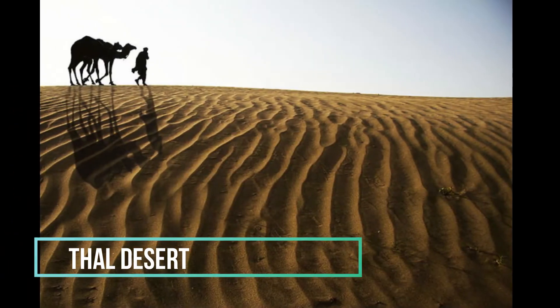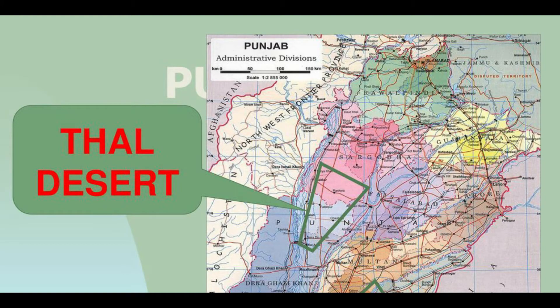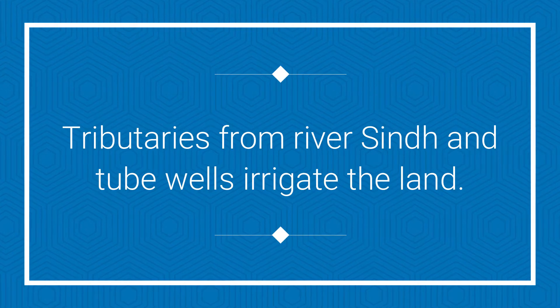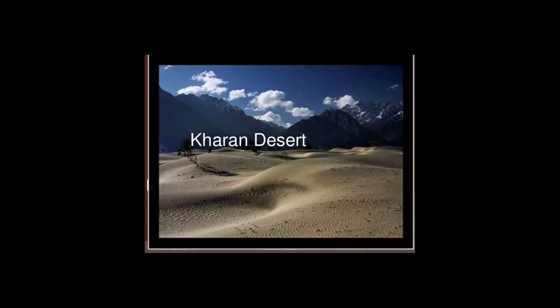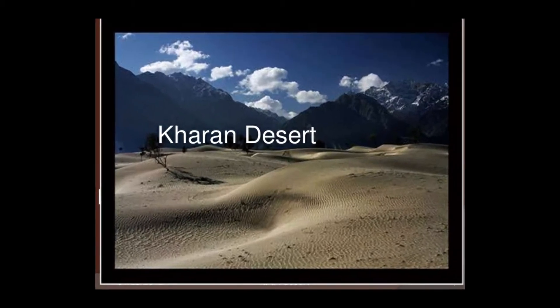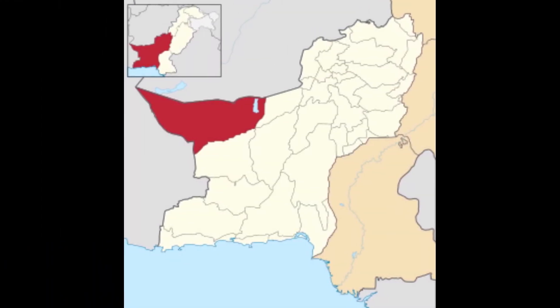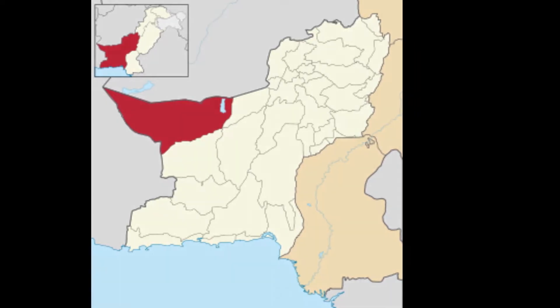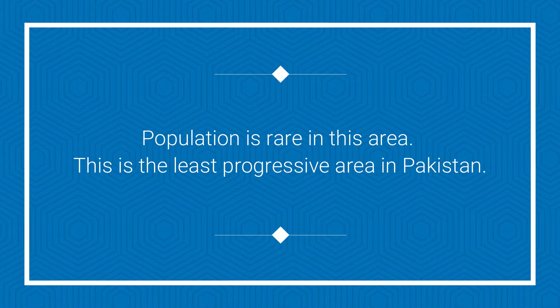The second desert of Pakistan is Thal, which is located between the Jhelum and Sindh rivers. Tributaries from River Sindh and tube wells irrigate the land. The third desert is Kharan, which is in Balochistan; some area of district Chagai is also included in this area. The population is rare in this area and this is the least progressive area in Pakistan.